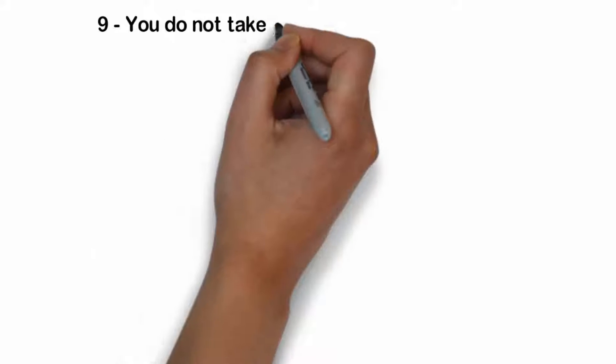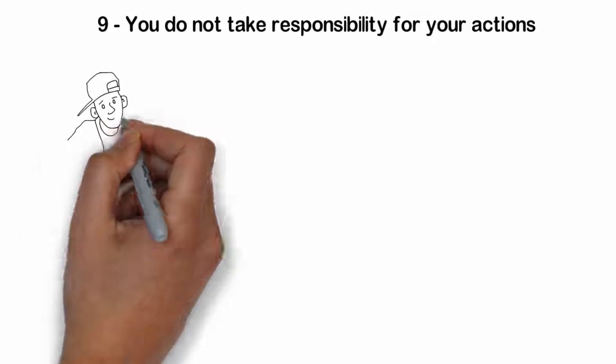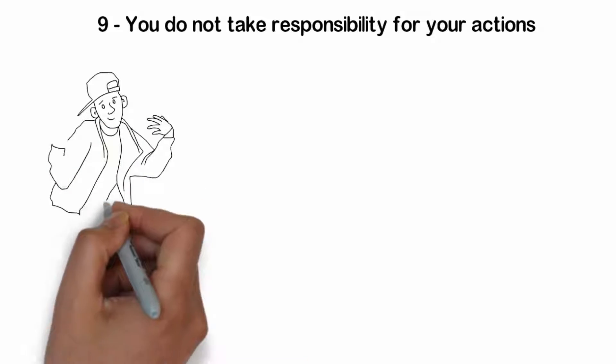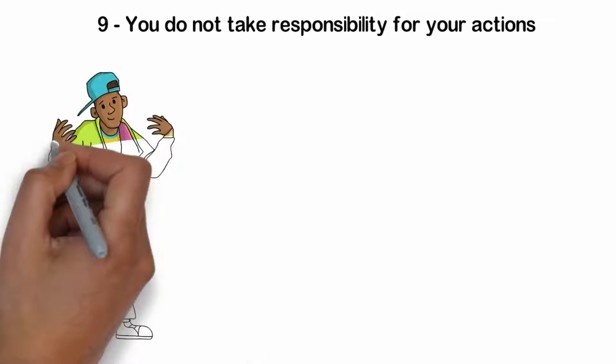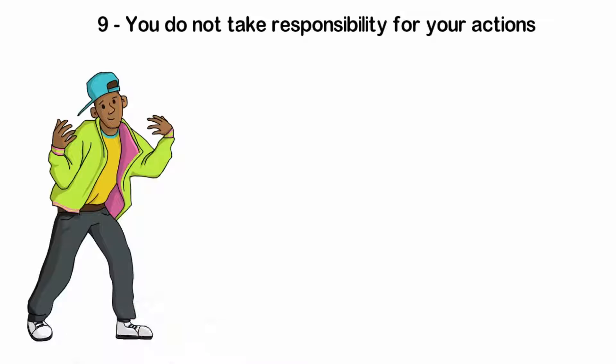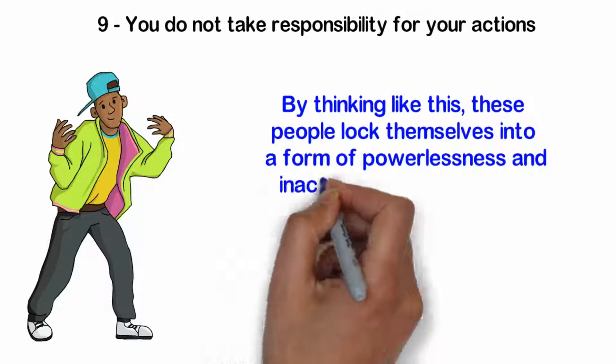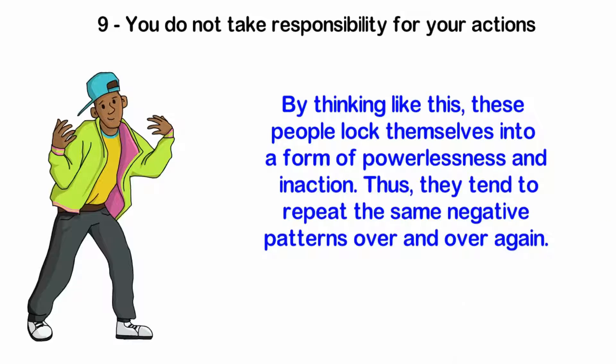Number 9: You do not take responsibility for your actions. Many people tend to see themselves as victims all the time. They imagine that anything that does not correspond to their desires is always due to the faults of an external phenomenon. Whether it is family, society, past bad experiences, or unfortunate circumstances, the problem is never about themselves, but about others. By thinking like this, these people lock themselves into a form of powerlessness and inaction. Thus, they tend to repeat the same negative patterns over and over again.